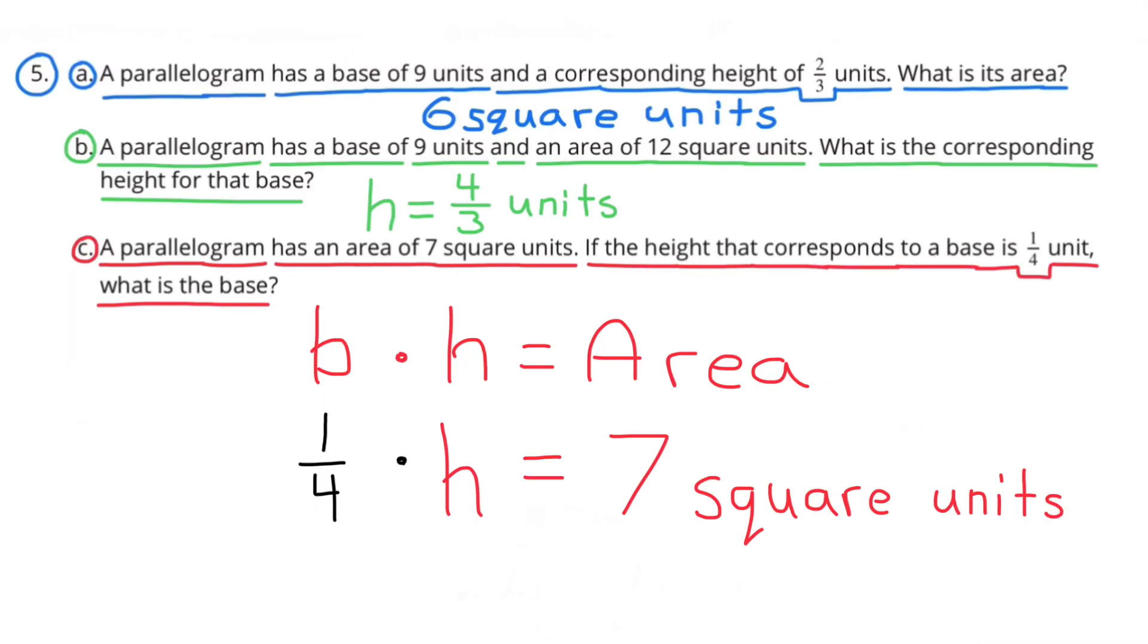Again, we know that base times height equals the area. They provided us with the base and the area. One-fourth times height equals seven square units. We need to figure out what number times one-fourth equals seven. Or, how many times does one-fourth go into seven?